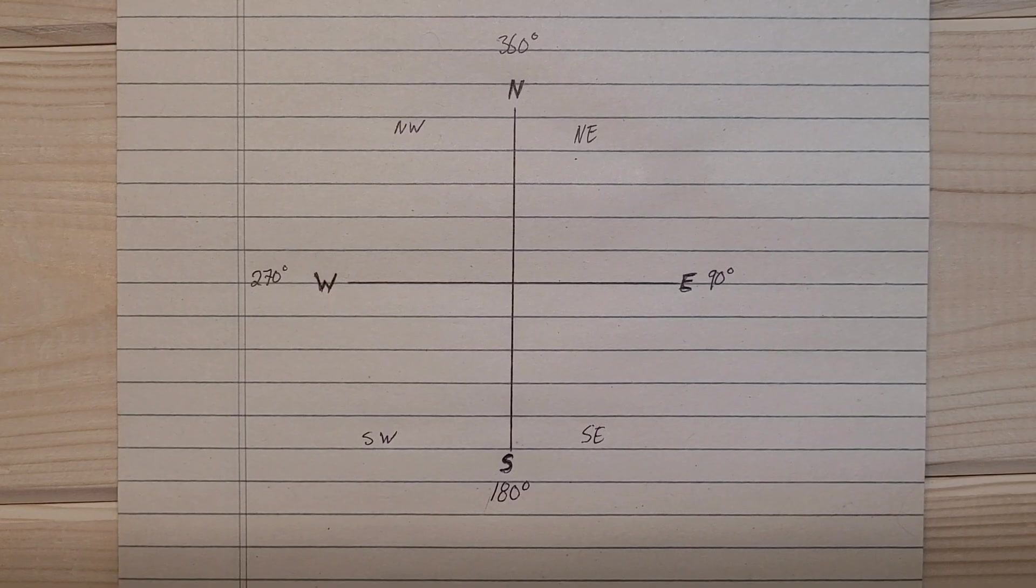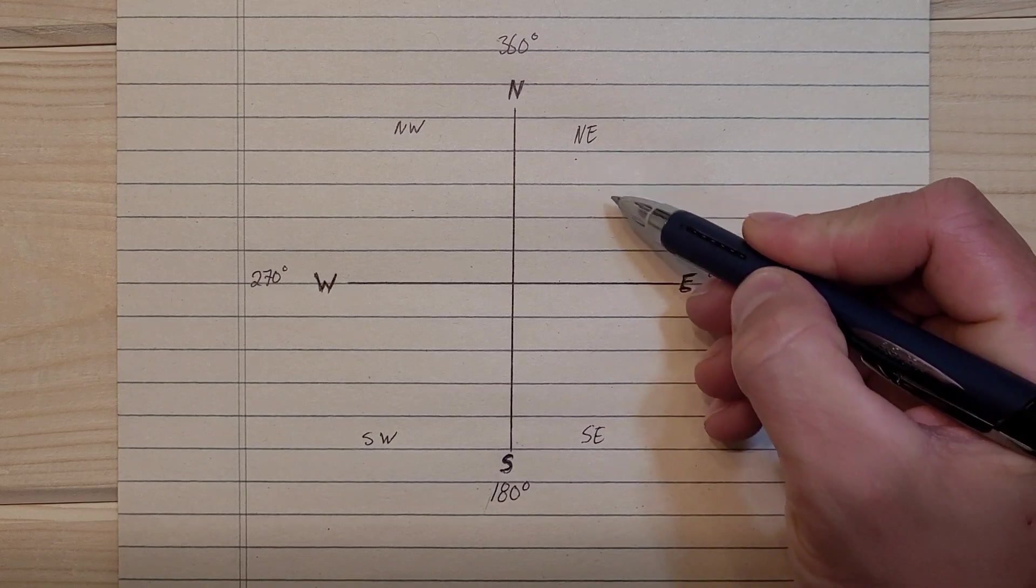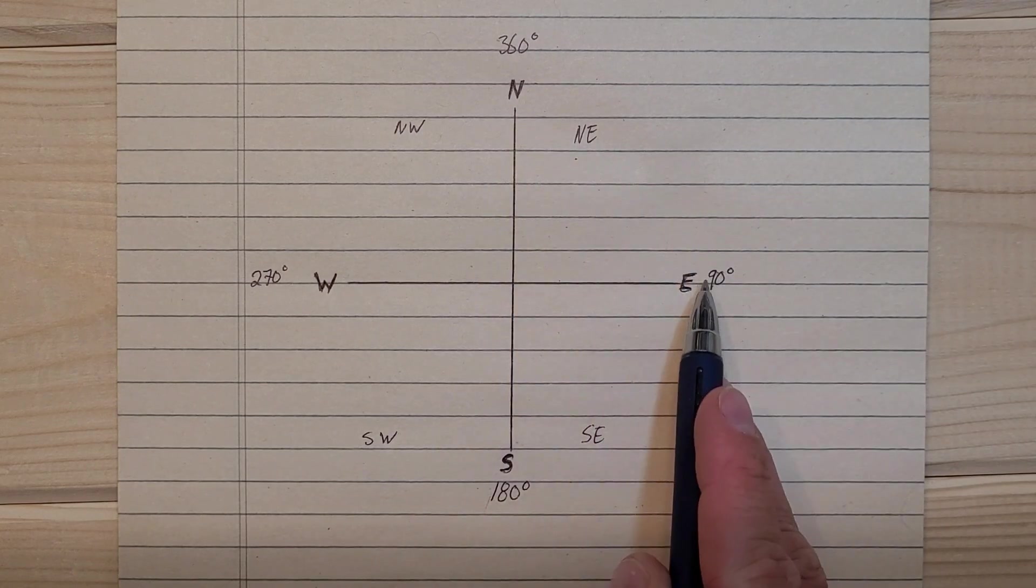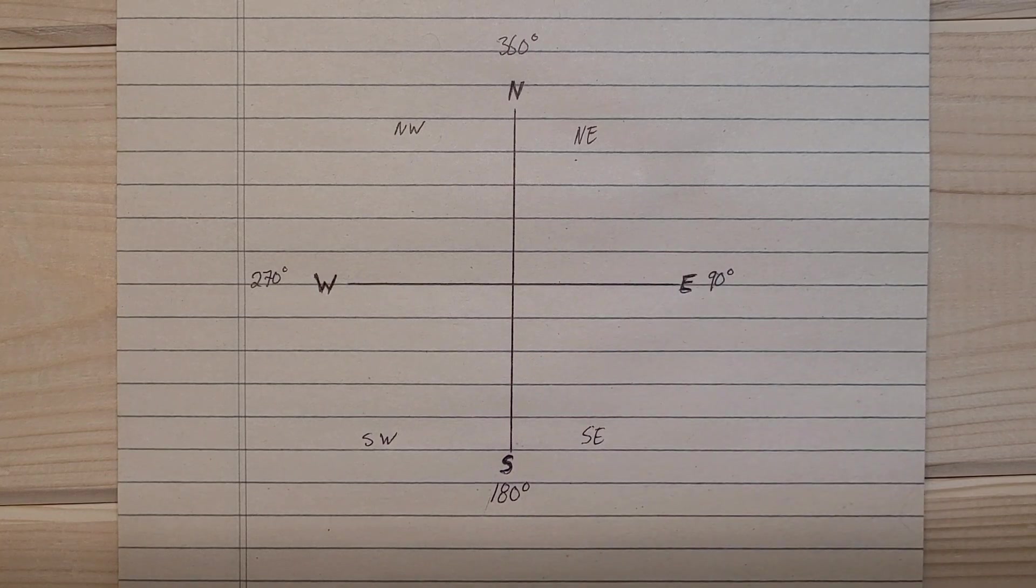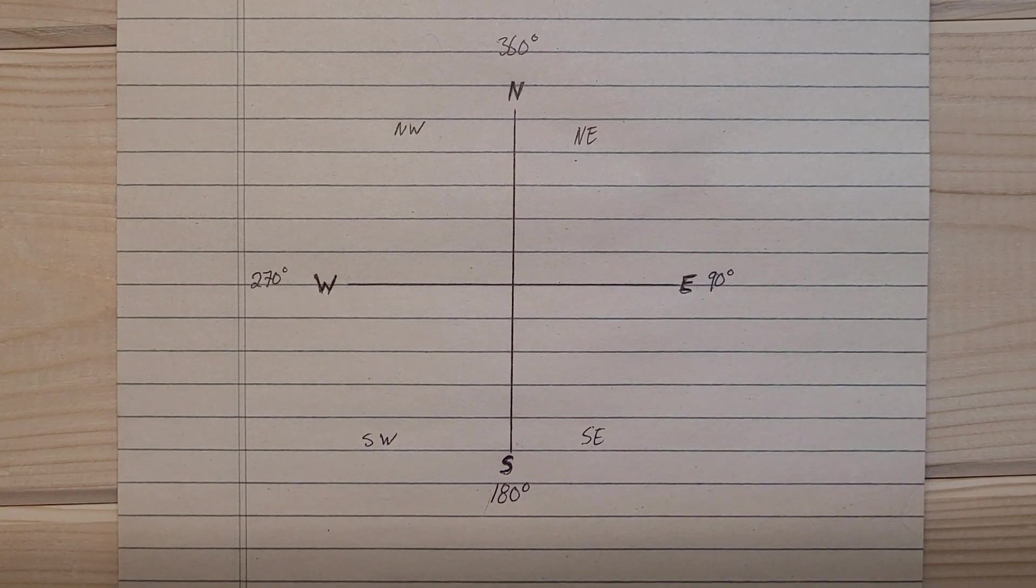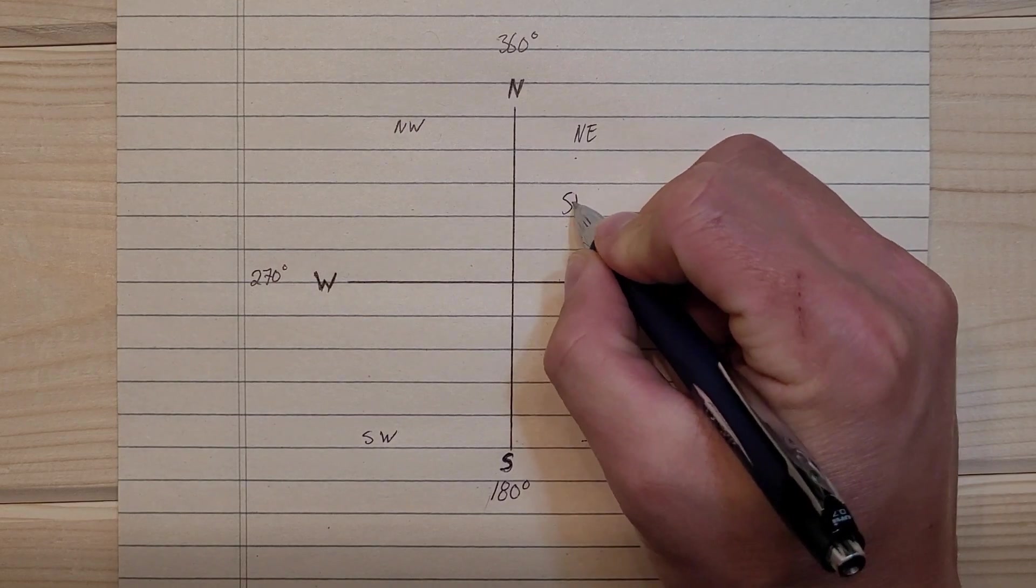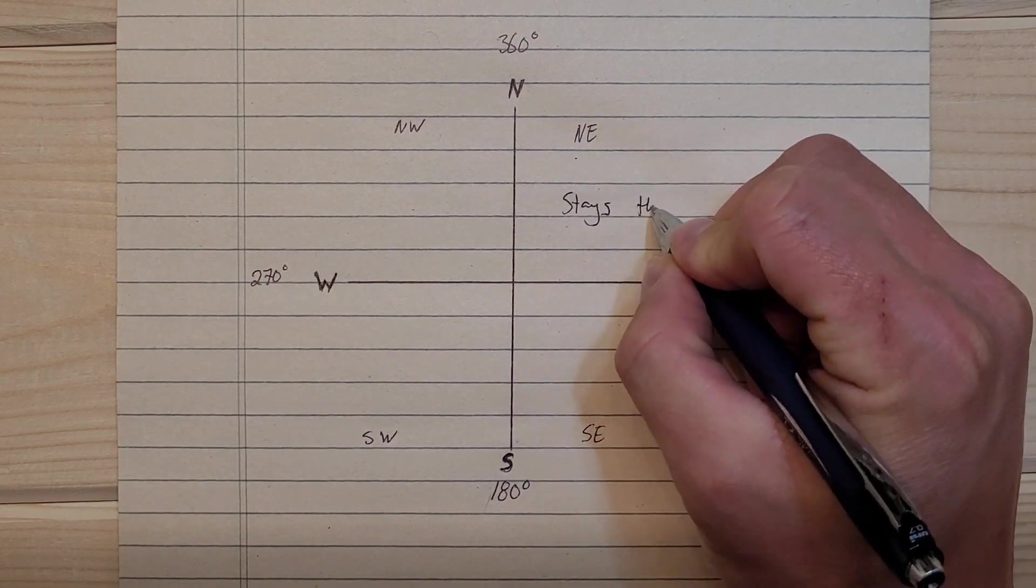If you're given an azimuth that falls within the northeast quadrant, or from 0 to 90 degrees, it's just going to stay the same. All you're going to do is add a northeast to it. So we'll write stays the same.